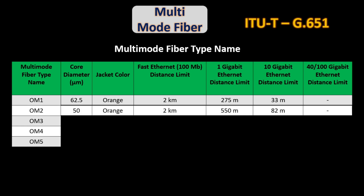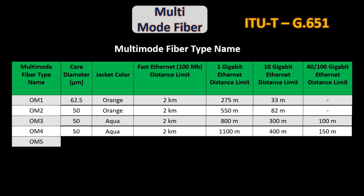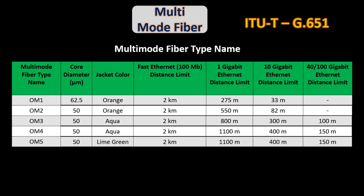OM2 standard was introduced with a 1 gigabit bandwidth distance of 600 meters and 10 Gbps distance of 82 meters. OM3 emerged allowing 100 gigabits up to 100 meters distance. OM4 started to be used with 100 gigabits up to 150 meters distance. Finally, OM5 was created to be a more economical solution than OM4.